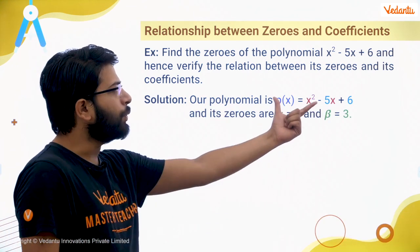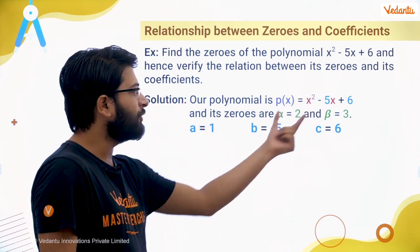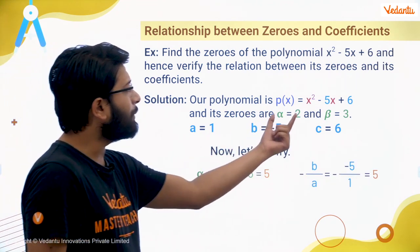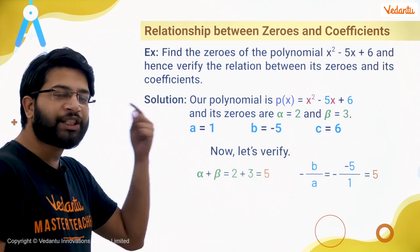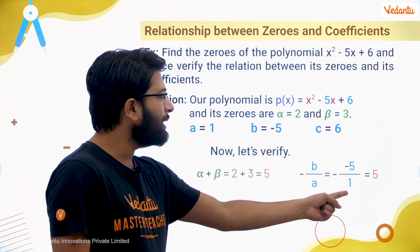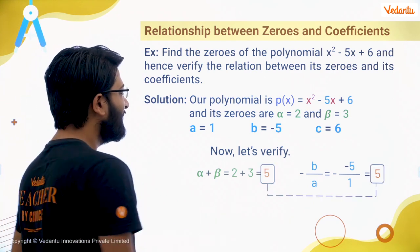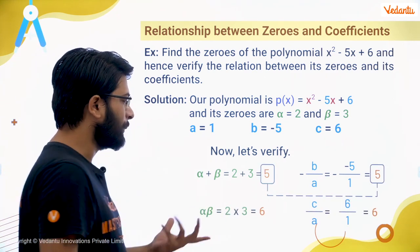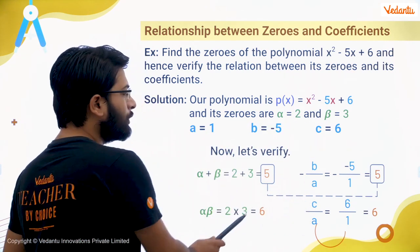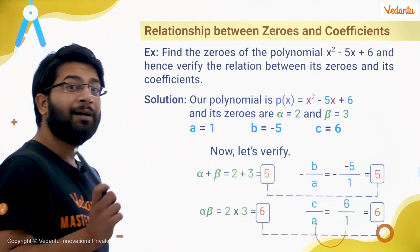Now let's verify the zeros satisfy the relationship between the coefficients and its zeros. We have alpha equal to 2, beta equal to 3, and the values a equals 1, b equals minus 5, c equals 6. Alpha plus beta equals 2 plus 3 equals 5. And from the relation, alpha plus beta equals minus b upon a, which also gives minus(minus 5) upon 1 equal to 5 — same value. Now alpha·beta equals 2 times 3 equals 6, and c upon a equals 6 upon 1 equals 6. So alpha·beta and c upon a have the same value — they satisfy the relationship.